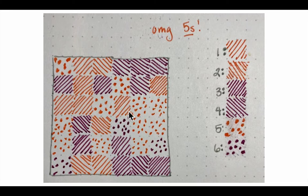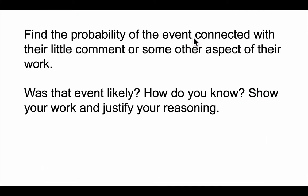So we're looking at 36 rolls of a dice and 11 of them were fives. Does that warrant the comment, oh my god, fives? So the first question that I presented was basically to find the probability of that event or some other thing that you're looking at and then discuss it. Was that event likely? How do you know? Show your work. Justify your reasoning.